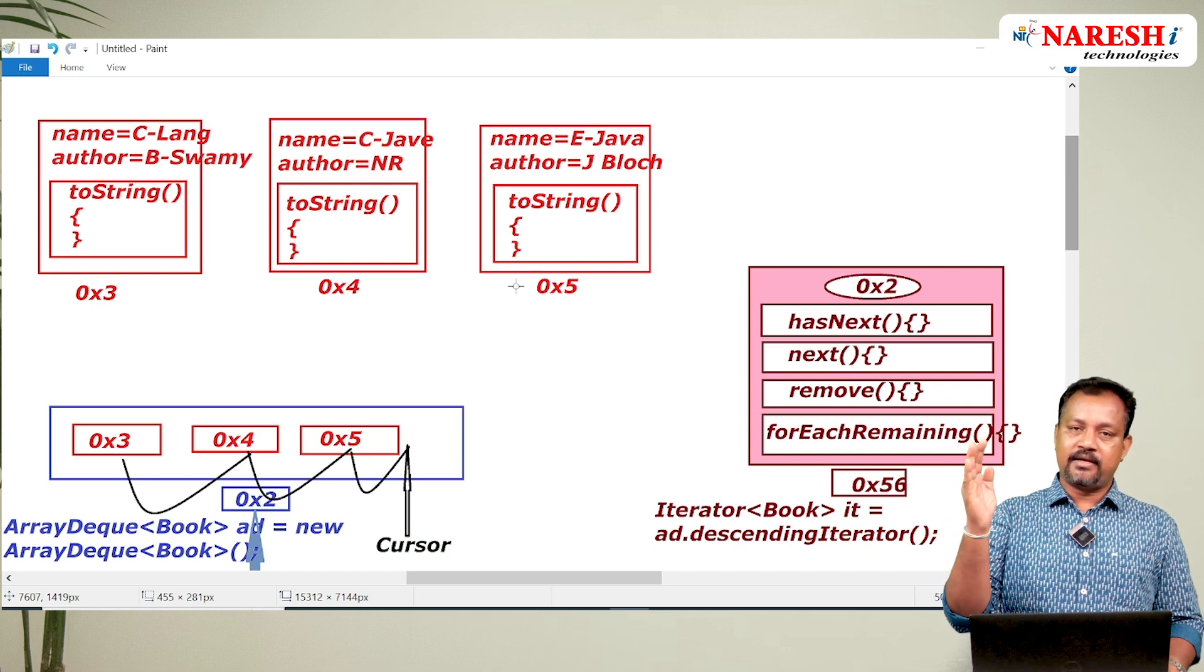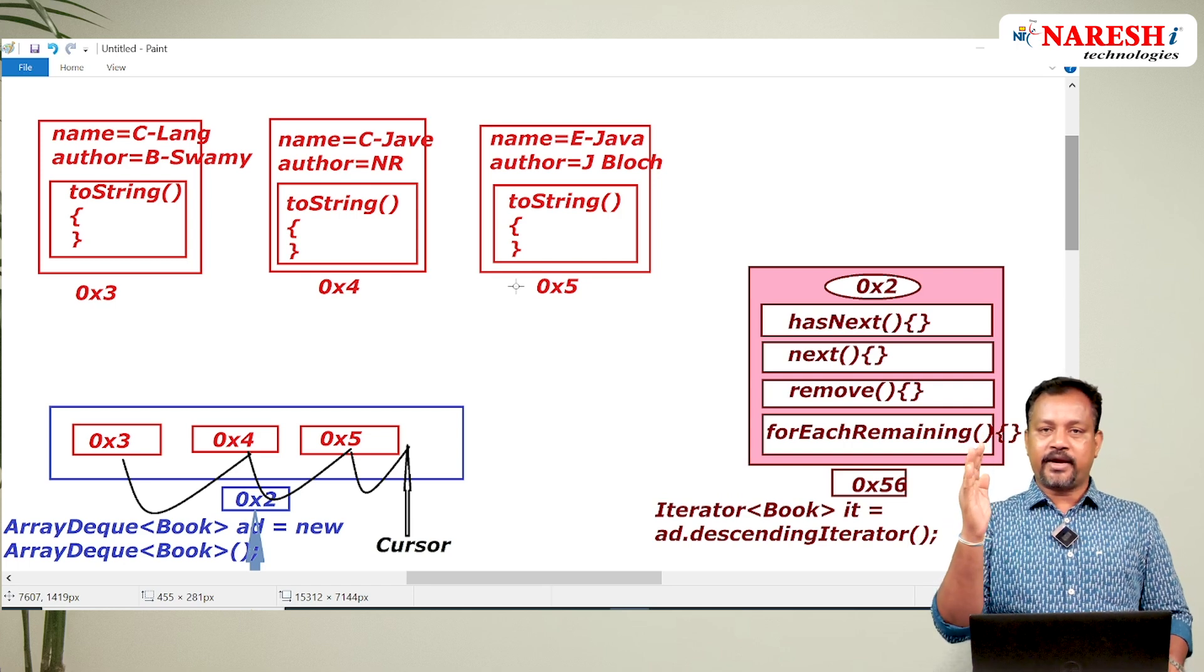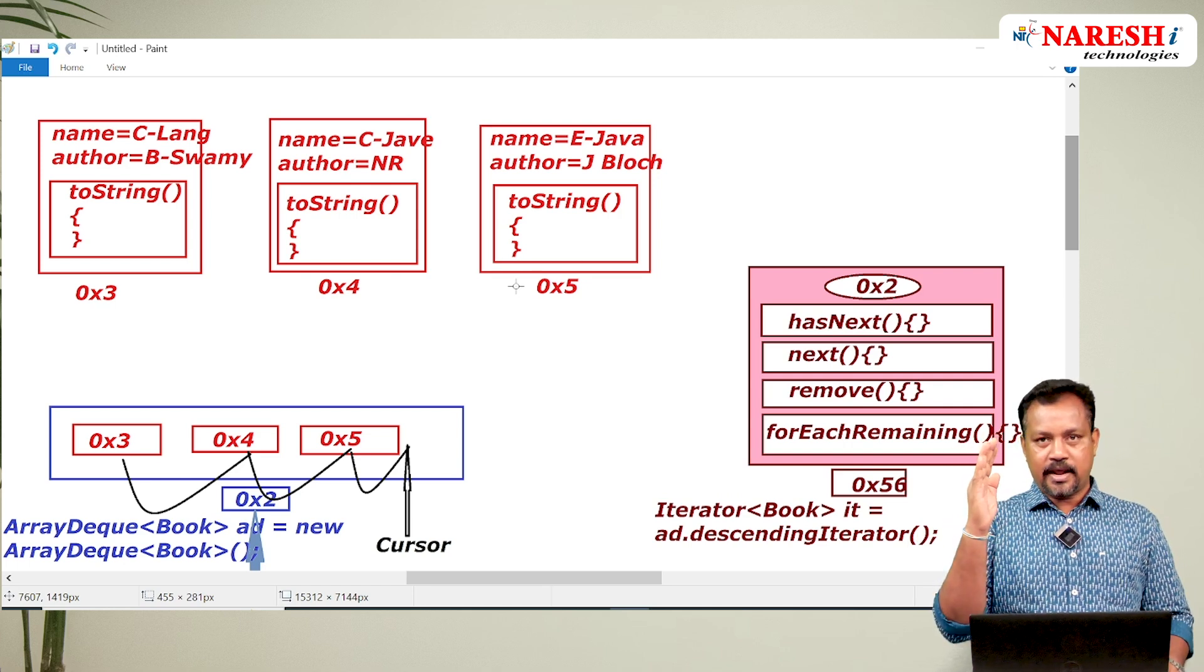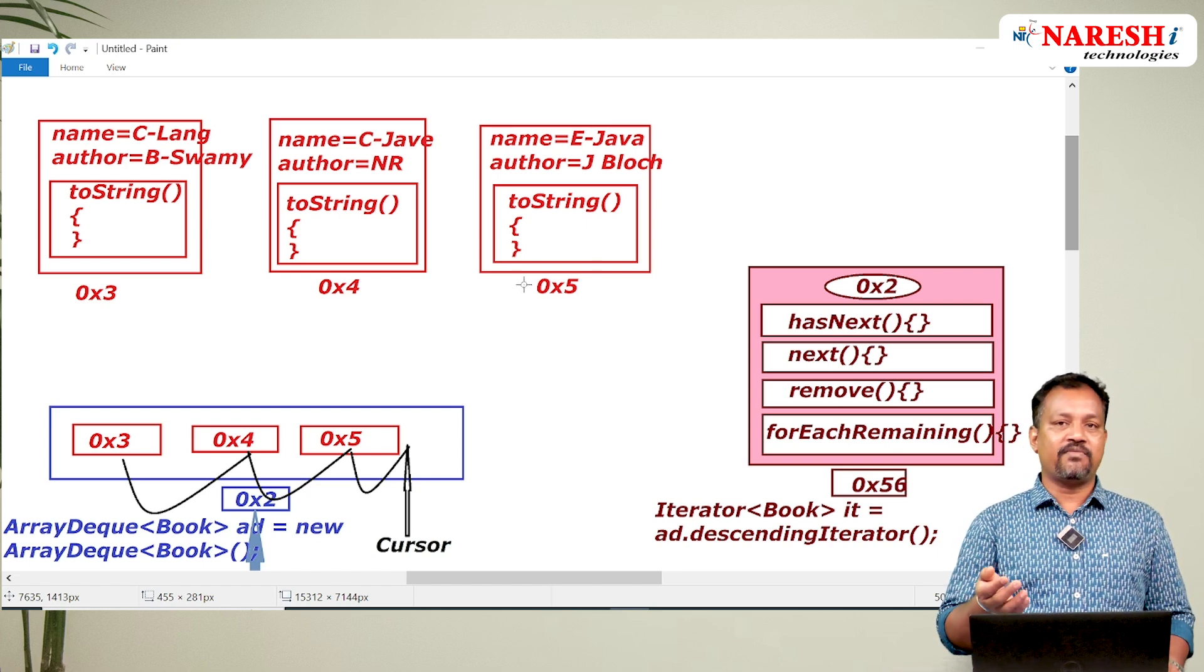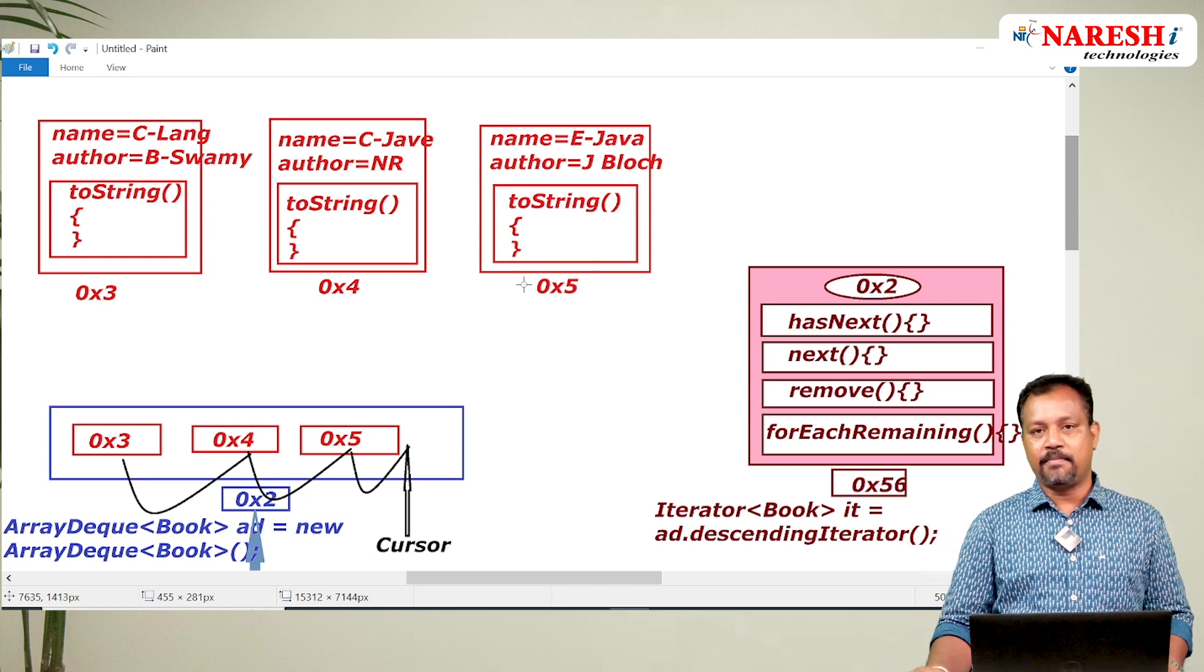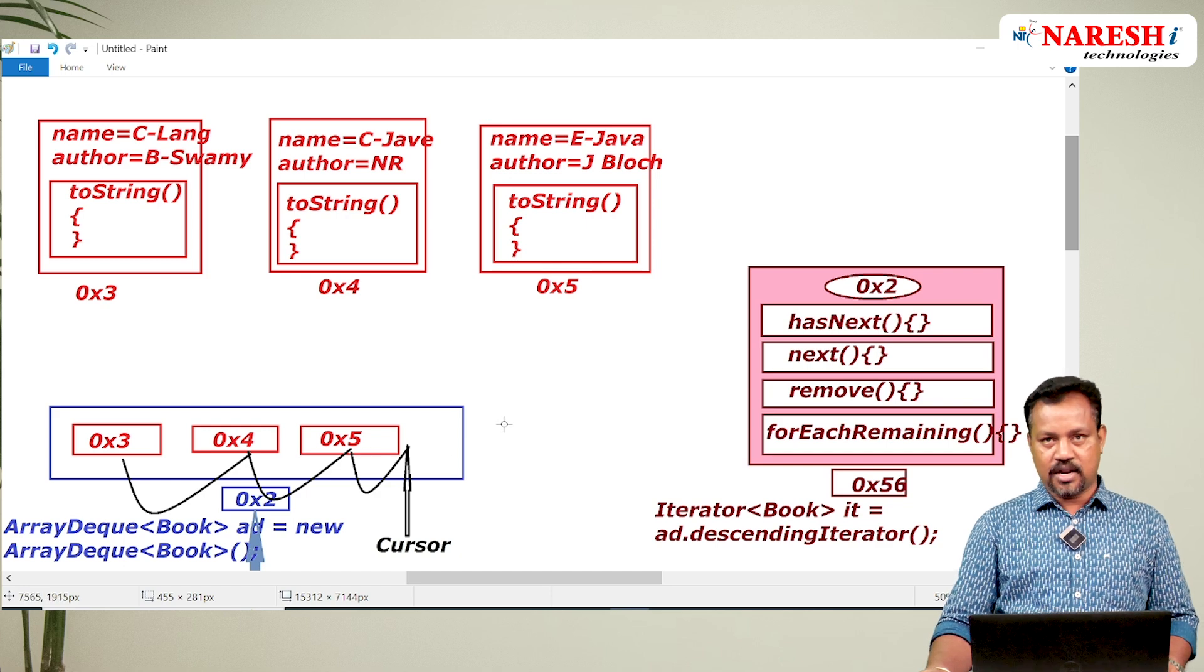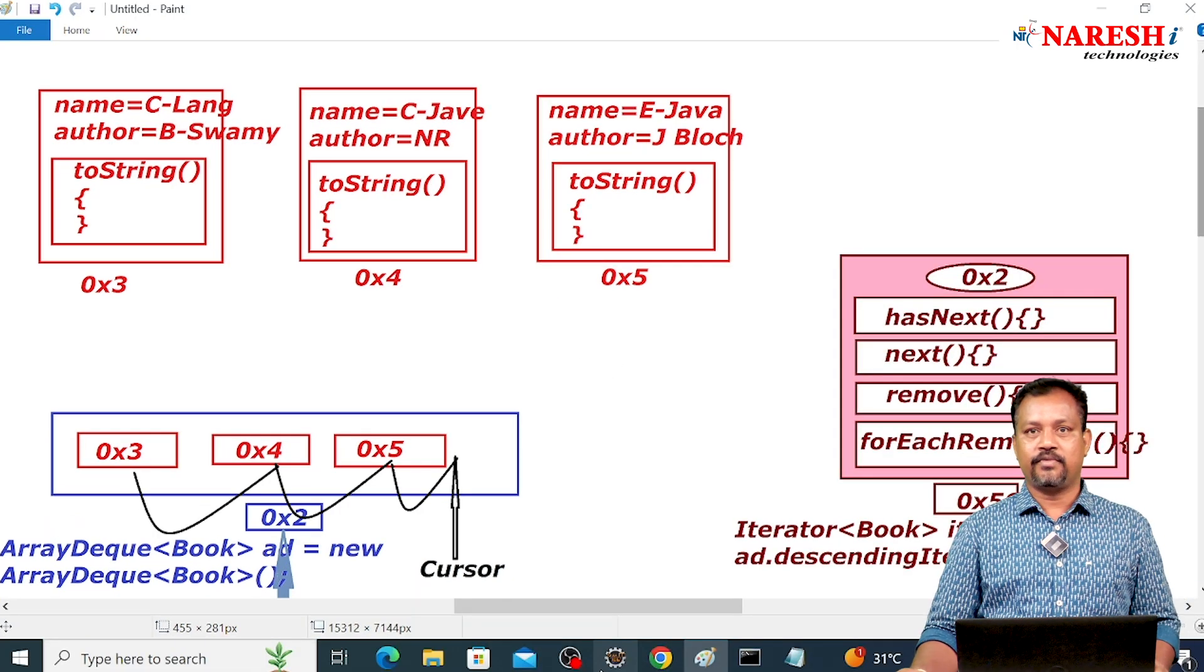We are trying to display the books from back, in a backward direction we are going to display. Descending iterator will create one cursor in the back after the last element. Thank you very much.